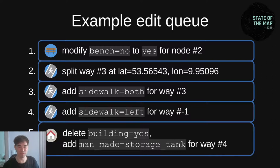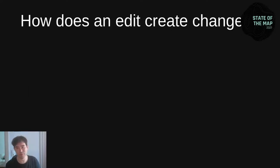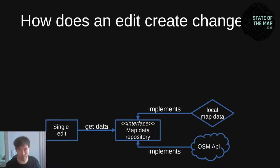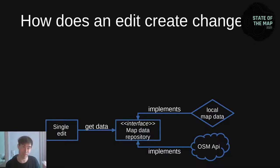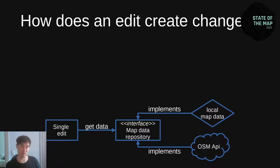So how does an edit create changes? Recalling the earlier diagram: the edit is applied to both the local map data and when uploading the change. Since we don't want a duplicate implementation, there's just the interface — the map data repository. Both the local map data and the uploader for the OpenStreetMap API implement that interface. This map data repository supplies all the information the edit needs. For the split way, the edit needs to know which relations refer to the way and all the nodes of the way.